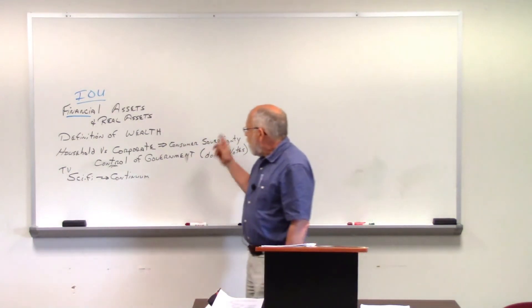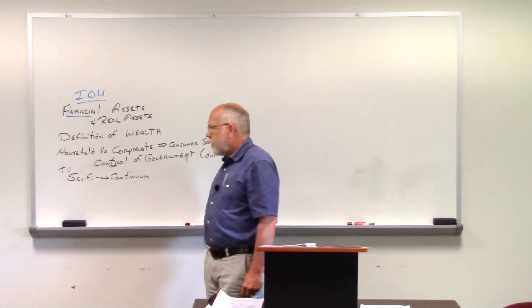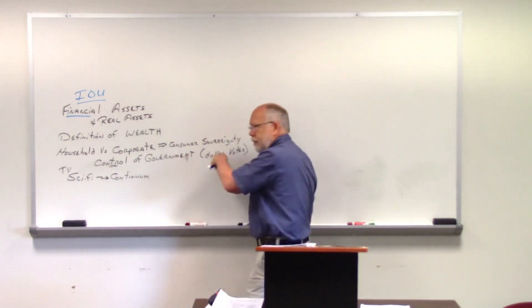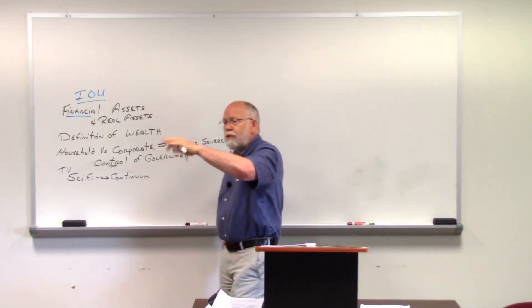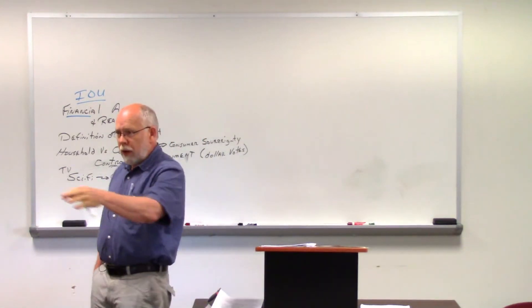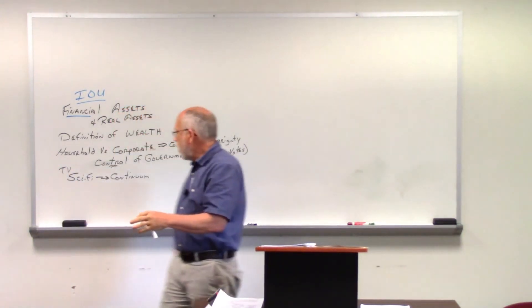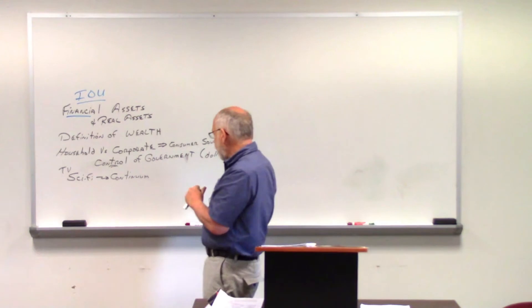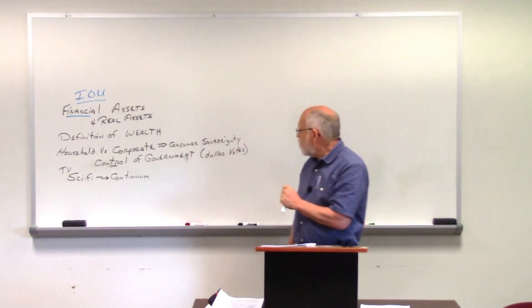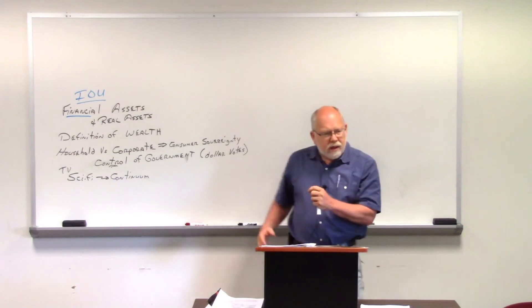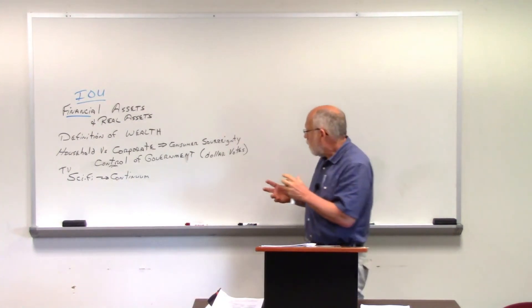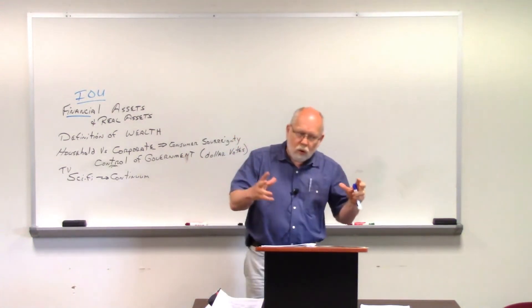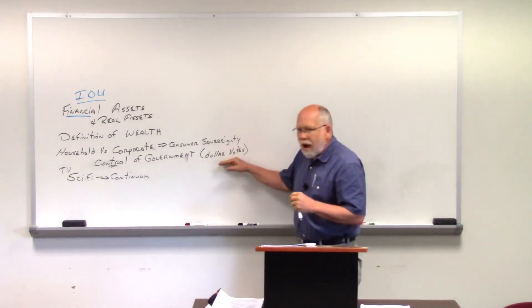Our text talks about something called consumer sovereignty. Consumer sovereignty. Now, sovereignty, again, we're talking about this suzerante lord thing that we talked about earlier and when we were reviewing it today. We're talking about who's the king? Who's the sovereign? Who's in charge? Who's calling the shots? And our text uses this term of consumer sovereignty and says that households really control the civil government and control the economy through their dollar votes.